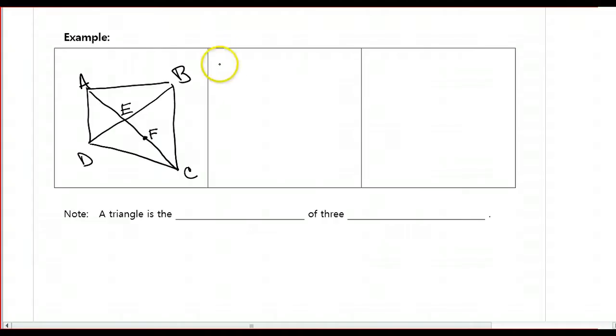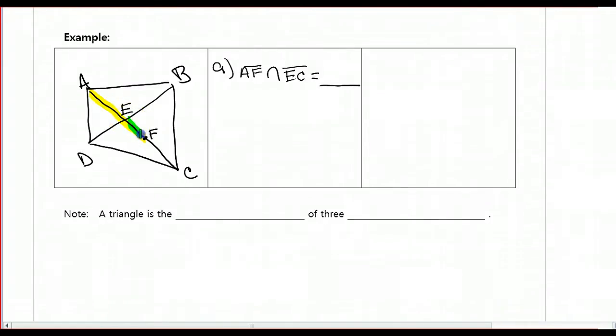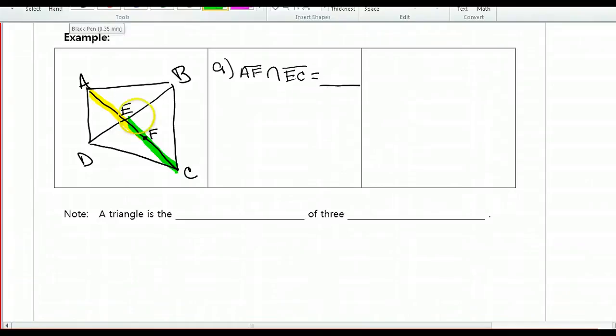For part A, I want to find the intersection of segment AF intersected with segment EC. Let's take a look. I'm going to grab a highlighter here. I've got AF, which is right over here. And I want to find the intersection with EC, which is right over here. So I want to see where do those two highlighted segments touch or overlap. We can see that they overlap right here in the middle from E to F, which would be a segment.